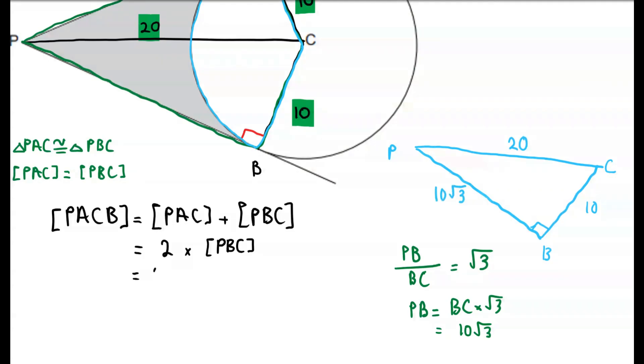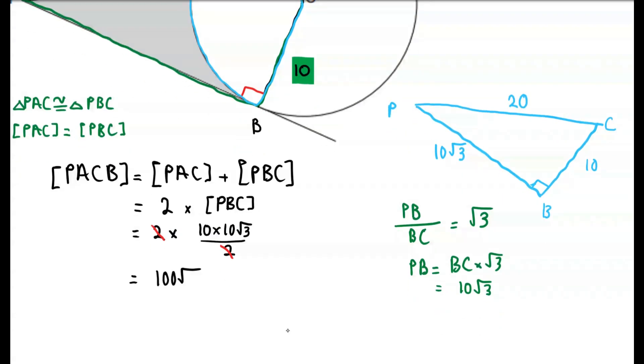So now we can find the area of triangle PBC. This is going to be 10 times 10 root 3 divided by 2. These 2's cancel out, and we get that the area of the quadrilateral PACB is 100 root 3.